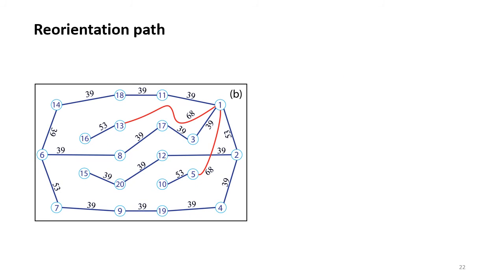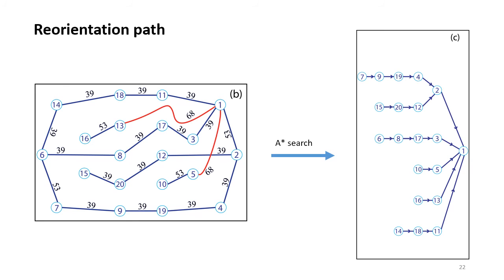Now, we can generate a reorientation map with the A-star search from our fully connected graph. The result is shown here in figure C. Once the vehicle identifies its current contact face, it will follow the reorientation map to its goal. For example, if the vehicle notices that it is now at contact face 6, as is shown here on the third row of the map,